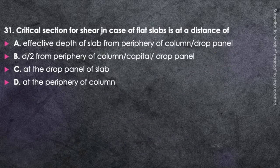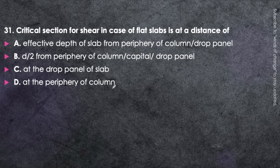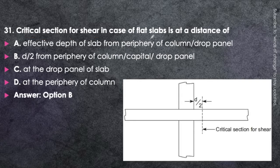Question number 31: The critical section for shear in case of flat slabs is at a distance of d/2 from the periphery of the column, capital, or drop panel. So if this is the flat slab and this is the column or capital or drop panel, then at a distance of d/2 from its face, that is this depth by 2, this is the critical section for shear. Memorize it.